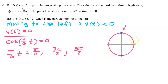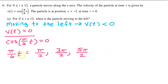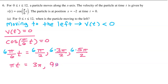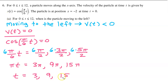So our solutions are pi over 2, 3pi over 2, and 5pi over 2. To solve for t, I multiply both sides by 6: pi times t equals 3pi, 9pi, and 15pi. Dividing everything by pi gives t equals 3, 9, or 15. It turns out we didn't need that extra value because t equals 15 falls outside the interval from 0 to 12, but notice we couldn't be sure unless we tried.